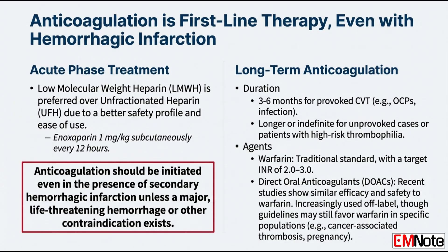LMWH is generally preferred for its predictability. A standard approach is enoxaparin dosed at 1 mg per kg subcutaneously every 12 hours. Once stabilized, we transition long-term to warfarin, targeting an INR between 2.0 and 3.0. The duration depends entirely on etiology: for provoked cases, three to six months is generally sufficient. For unprovoked CVT or high-risk thrombophilias, the duration shifts to potentially indefinite therapy.